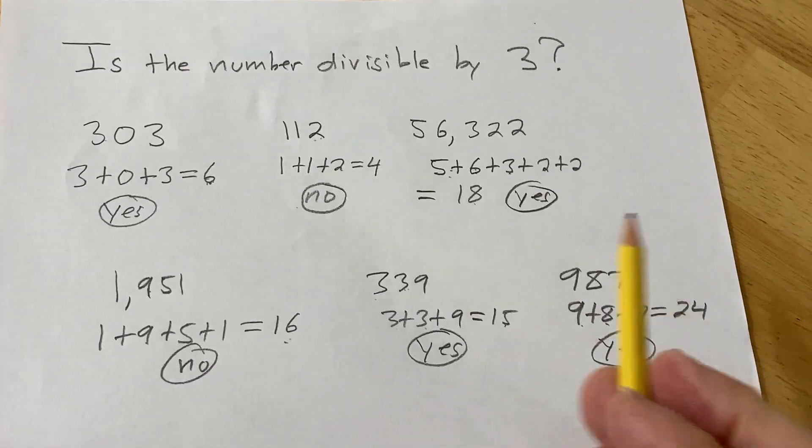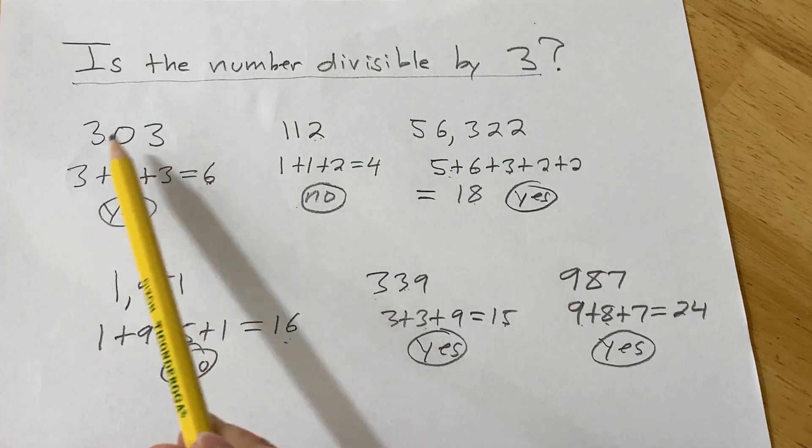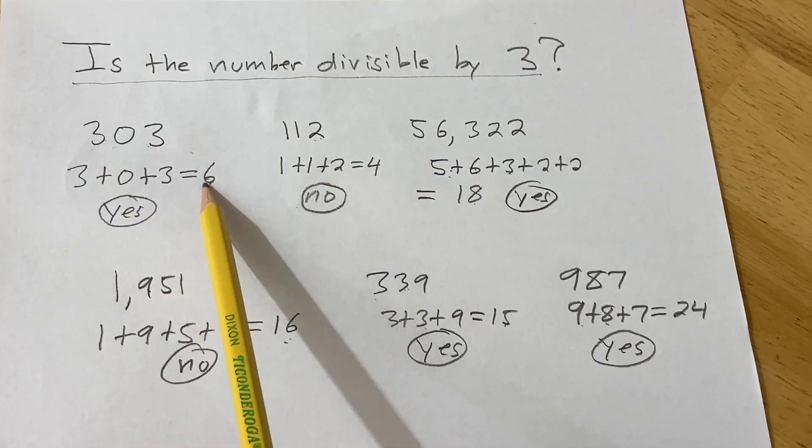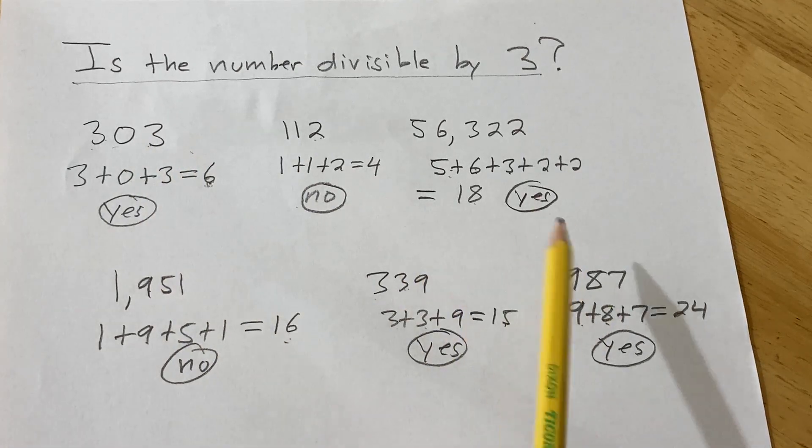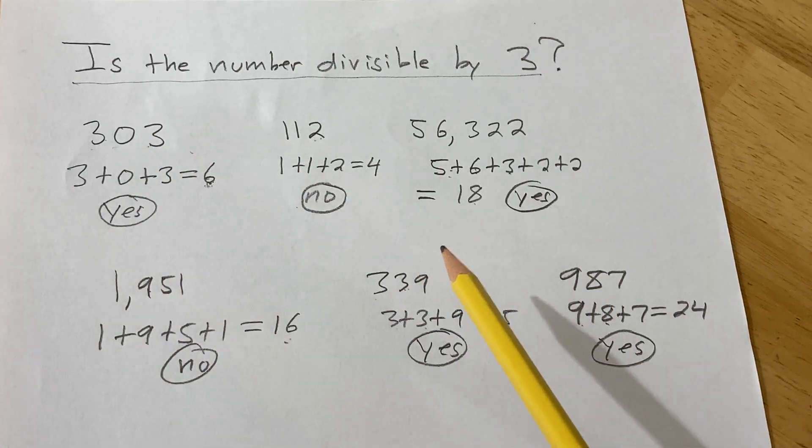So again, whenever you have a number and you're trying to see if that number is divisible by 3, all you do is you add up the digits. If the result is divisible by 3, then the original number is also divisible by 3. It's a pretty powerful trick. I hope this video has been helpful to someone. Good luck.